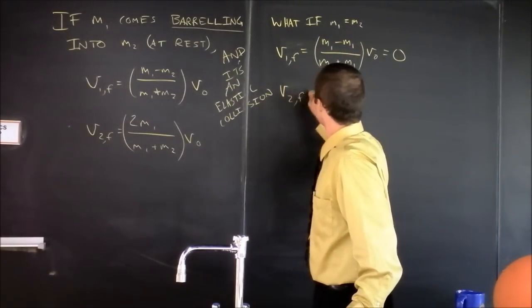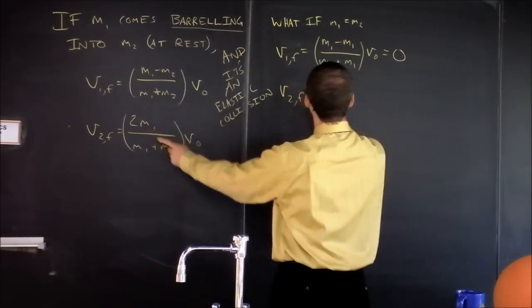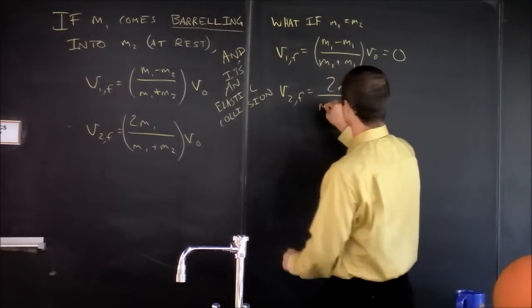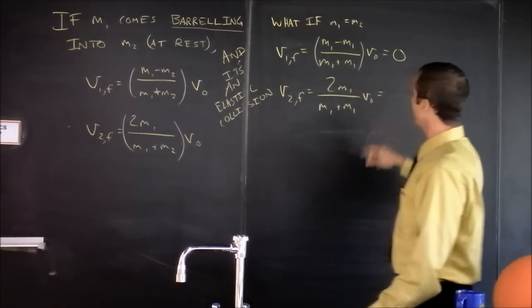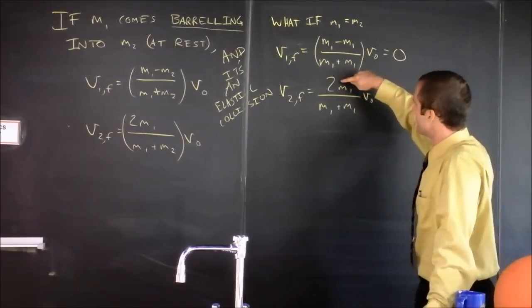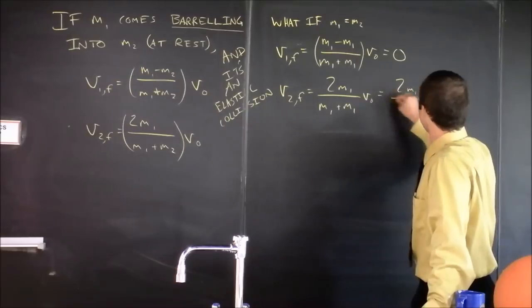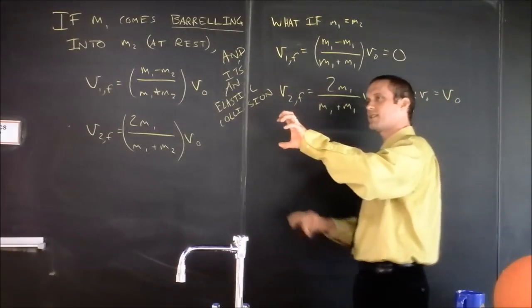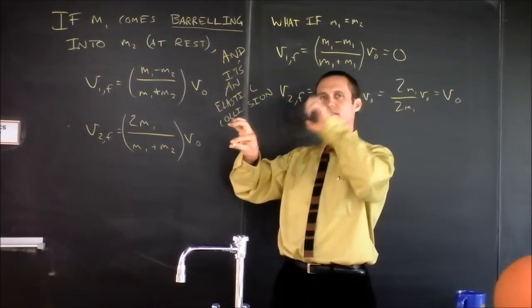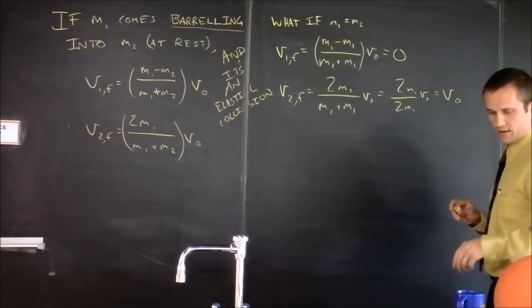And the final velocity of thing two, well, that's going to be two times M1. Remember, I'm not going to write M2. And then that's divided by M1 plus M1 times V naught. We can simplify that. This is 2M1 over 2M1 times V naught, which is V naught. So the first guy comes in with a certain velocity, hits the second guy, the first guy stops, and the second guy goes out with the same velocity. Interesting.